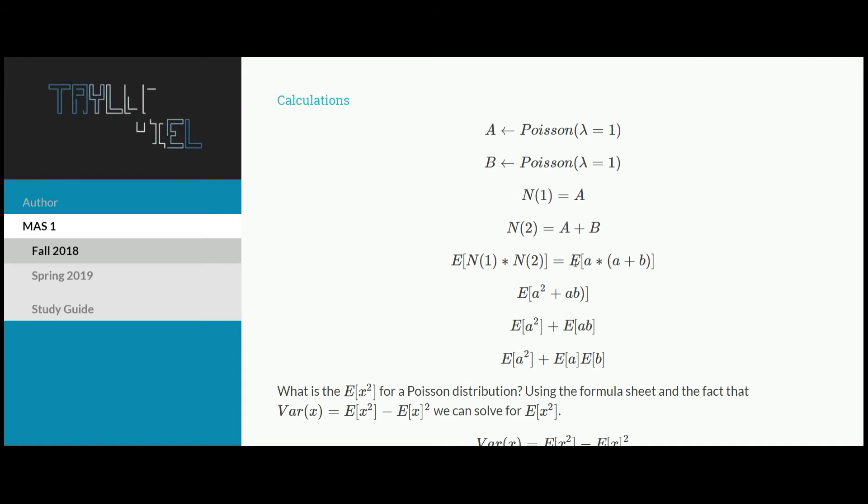Expected value of n of 1 times n of 2. Just rewriting that, and for whatever reason, I chose to switch to lowercase, so I apologize for that inconsistency. But here we have A times A plus B. Once we distribute that A out, we just get the expected value of A squared plus AB. Since it is only addition, we can break those into their two corresponding expected values. Expected value of A squared plus the expected value of AB.